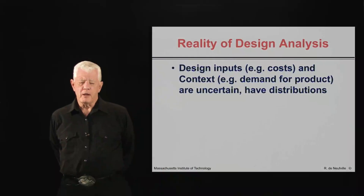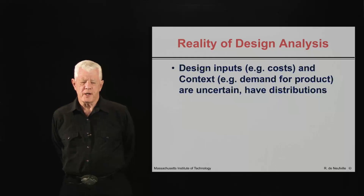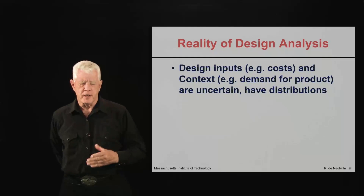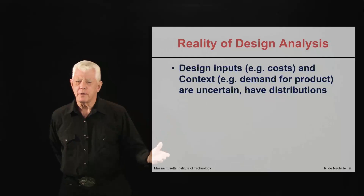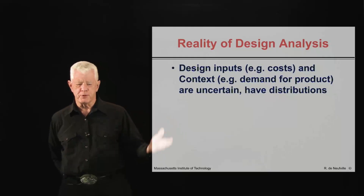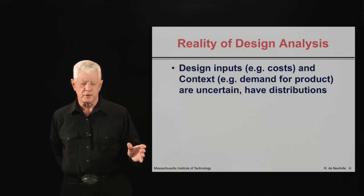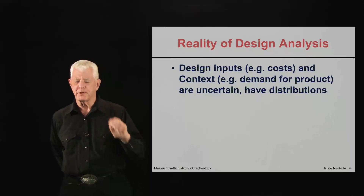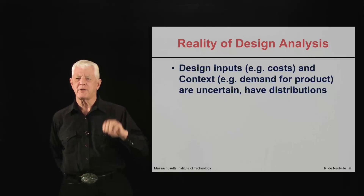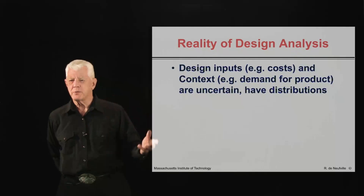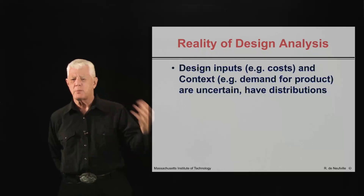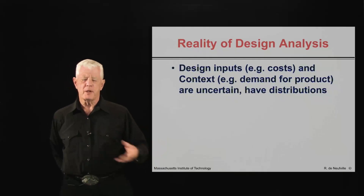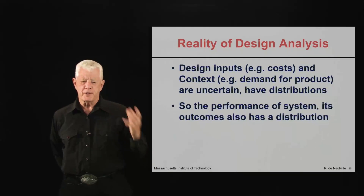The reality of design analysis is that the inputs and the context — that is, the demand for whatever the system is producing or delivering — are uncertain. They have distributions. We don't really know; we can't predict exactly how the system will perform because we don't exactly know what the costs are, what the demands are, or other things about it.